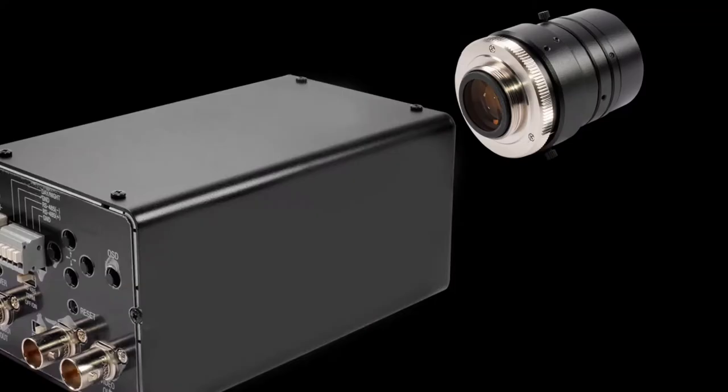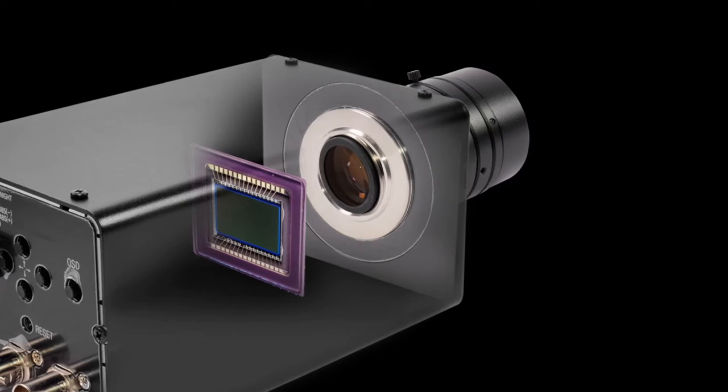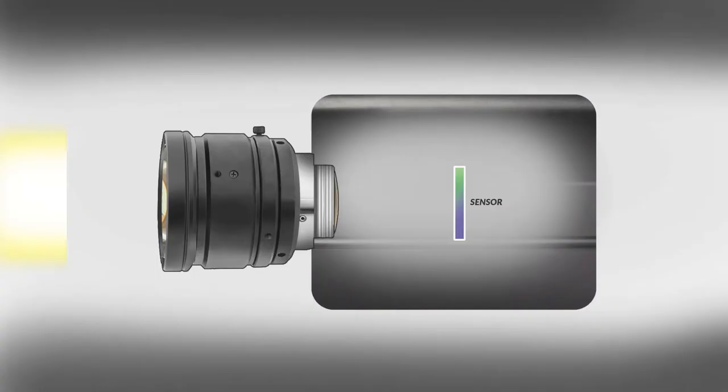Cameras have specially engineered connection or mounting systems so that the lens can connect with cameras in a very precise way. This ensures the light that the lens captures falls on the camera's image sensor exactly the way that it should. So my first top tip when choosing your lens is to make sure that the lens mount matches the camera mount. It sounds basic, but it can catch you out.